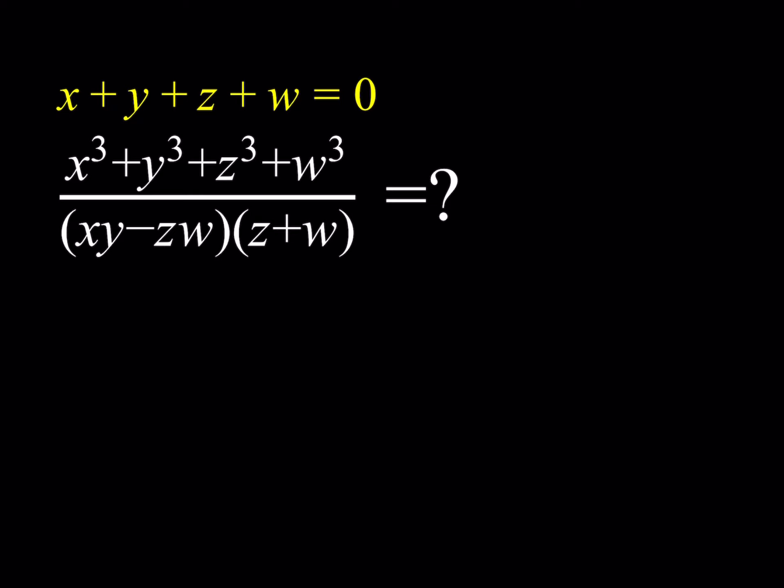So we're given x plus y plus z plus w is equal to 0, and we're supposed to evaluate x cubed plus y cubed plus z cubed plus w cubed divided by the quantity xy minus zw multiplied by the quantity z plus w.